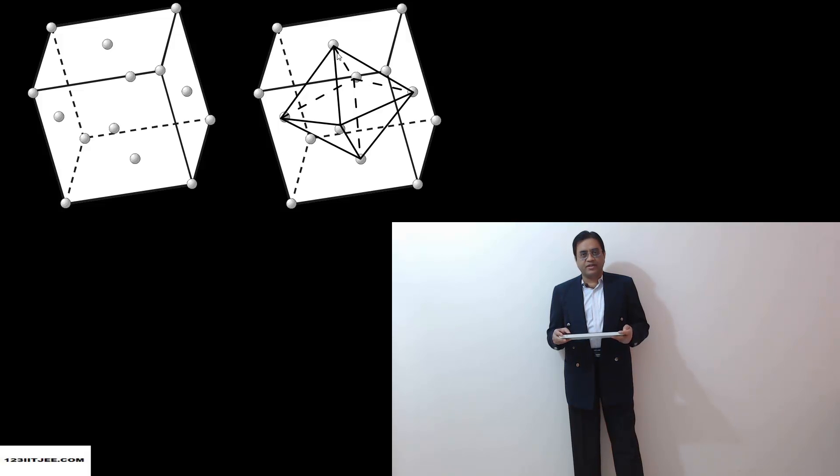These points give us an octahedron whose centroid is here, and that is where the octahedral void is located.